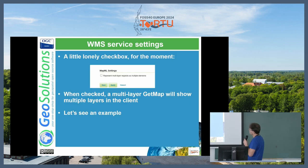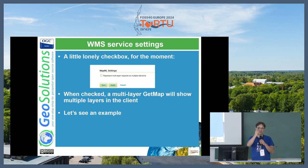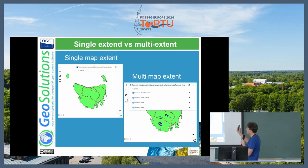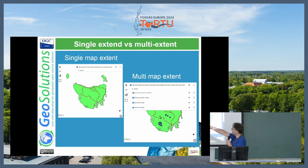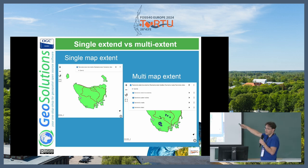MapML service configuration: right now we have just one little lonely checkbox that you will find in the WMS service administration. When checked and when you do a multi-layer getMap — layer 1, layer 2, layer 3 — it will show multiple layers in the client. With the checkbox disabled, the layer group shows as a single layer and you cannot split it and turn it on and off. If instead you enable it, you have access to the sub-layers and can turn them on and off and choose which ones you want to see.